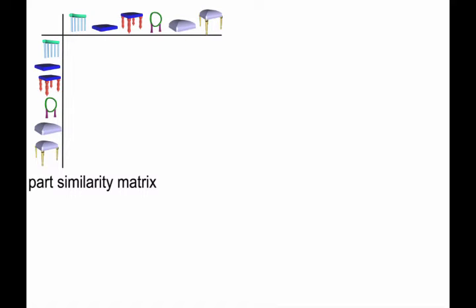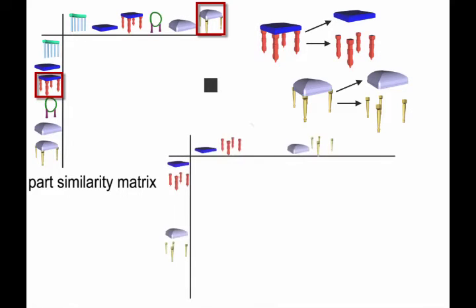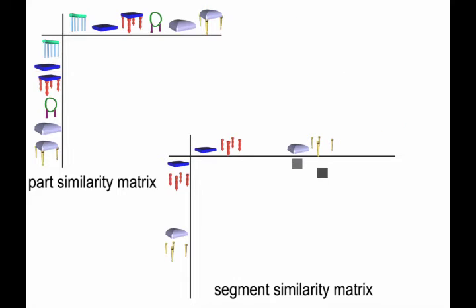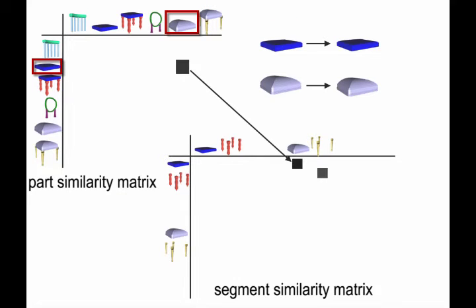Next, the similarities among parts are distributed to individual shape segments according to the segment volumes, forming a segment similarity matrix. Please refer to the paper for details.